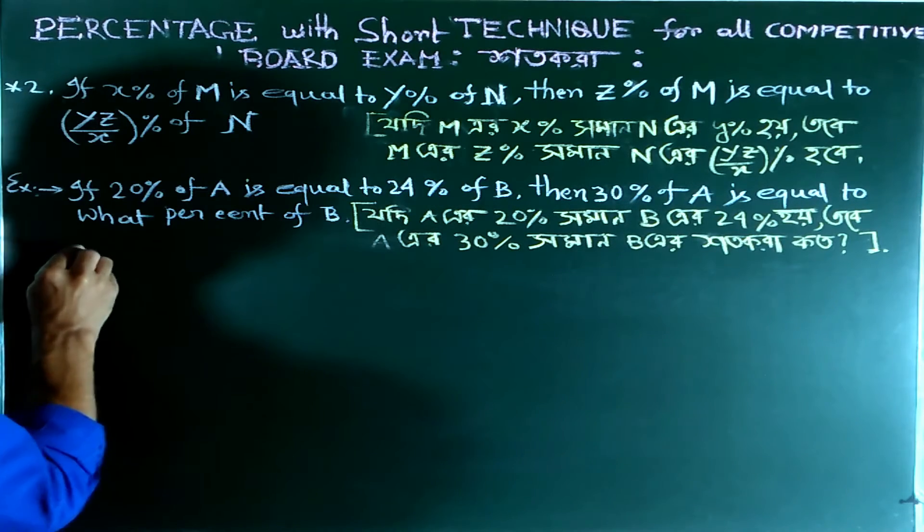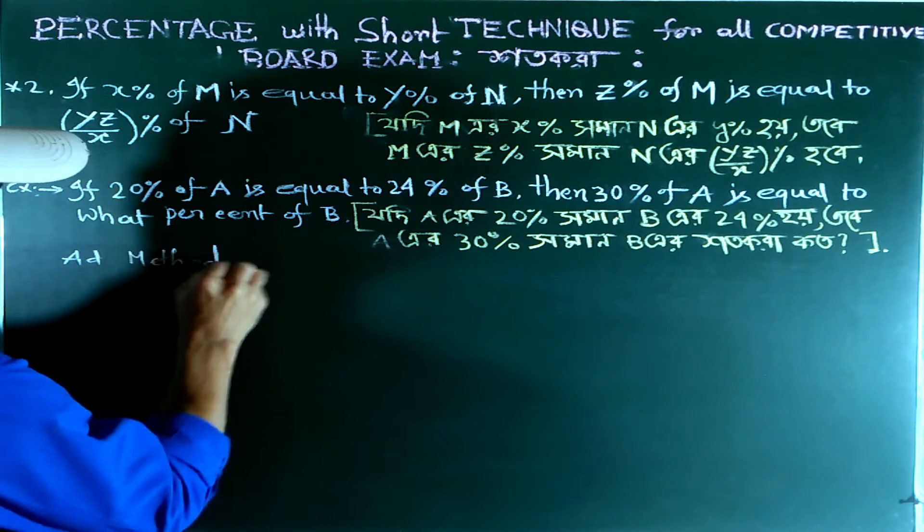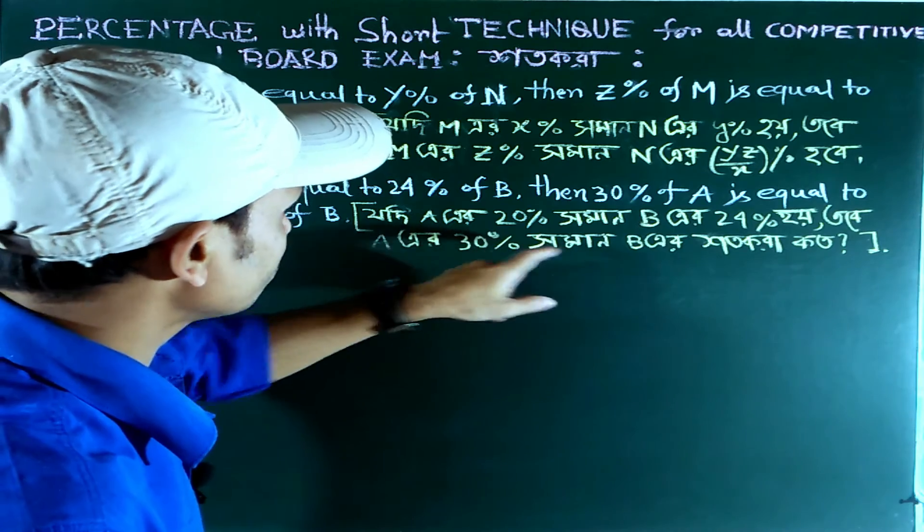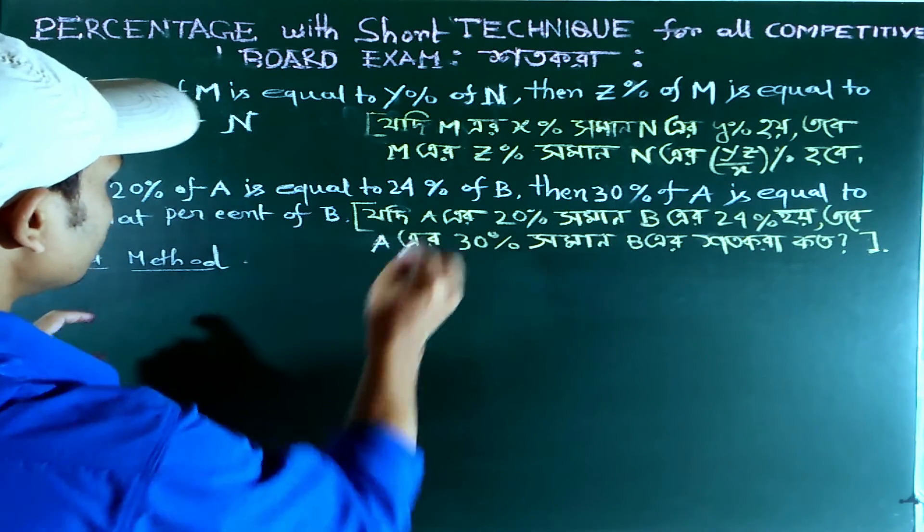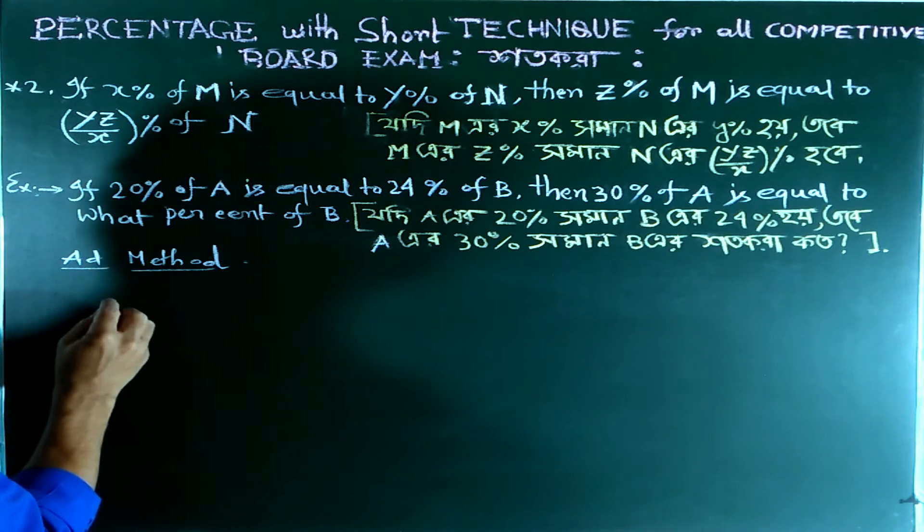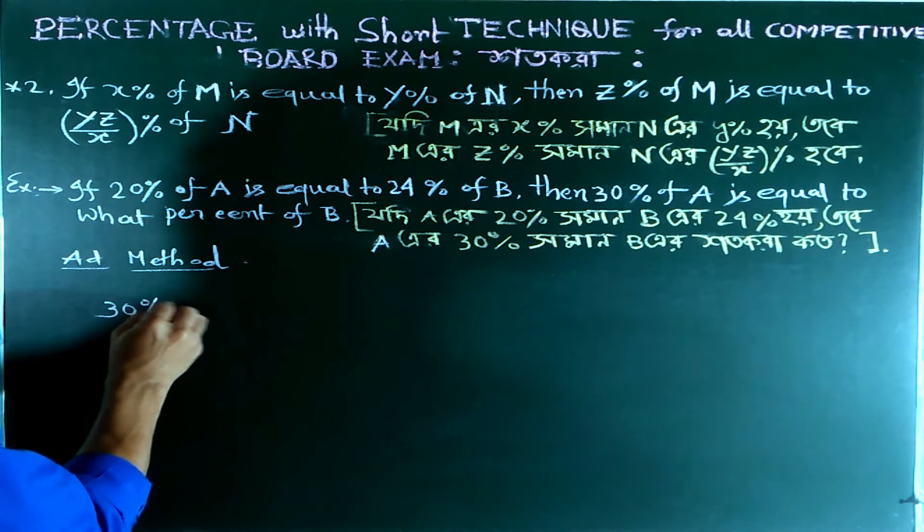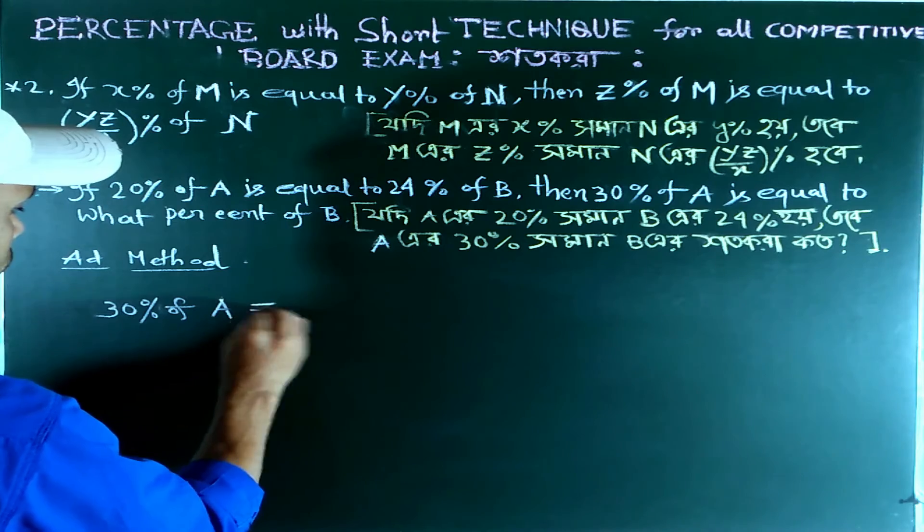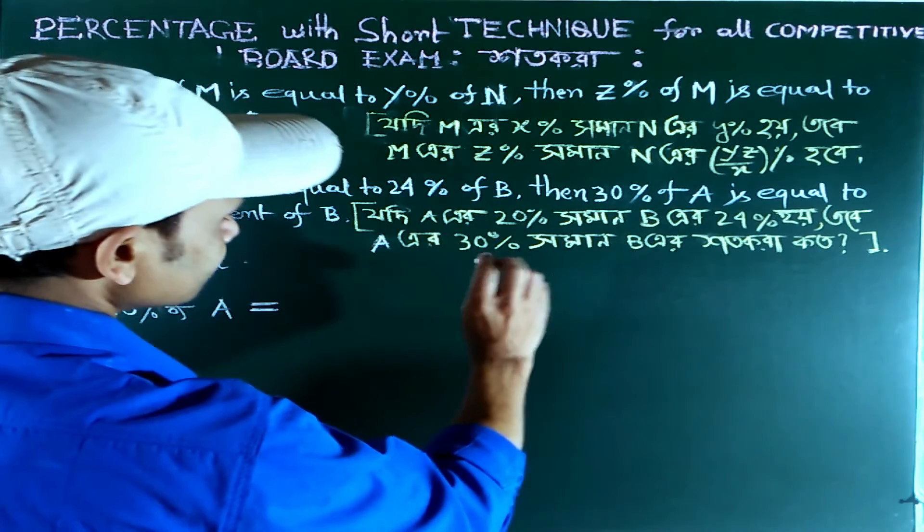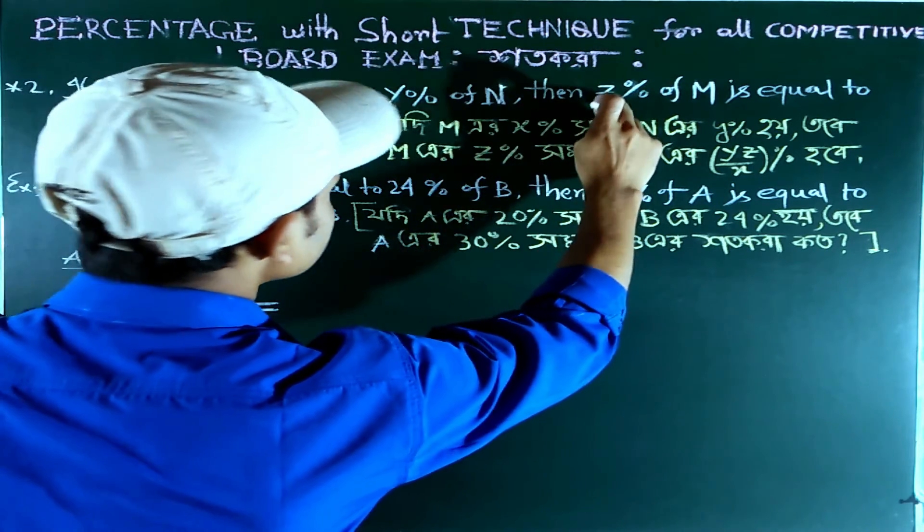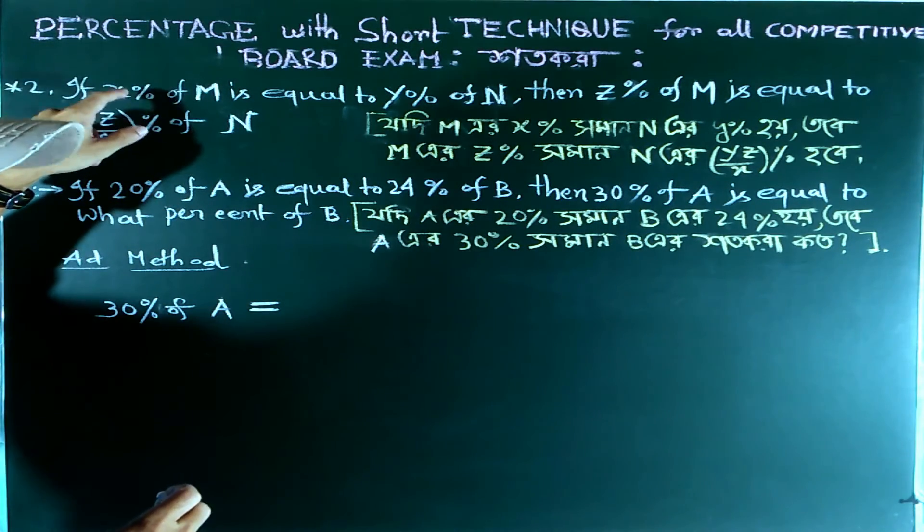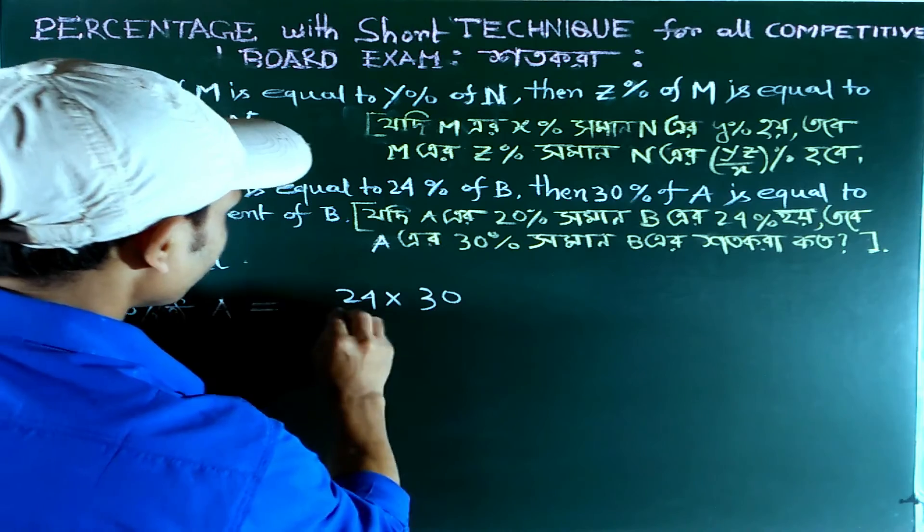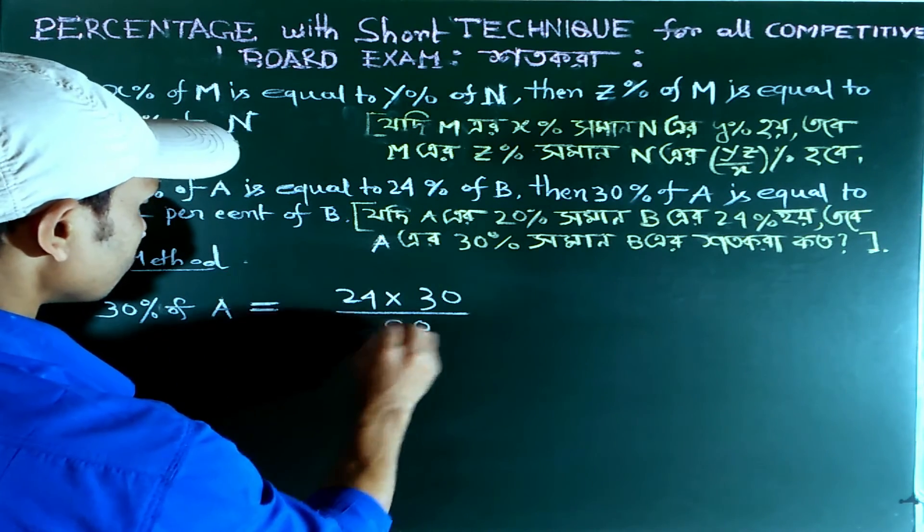Using the advance methodology, 30 percent of A equals - since 20 percent of A equals 24 percent of B, we apply the formula. Here Y is 24, Z is 30, and X is 20. So it's YZ upon X, which means 24 times 30 upon 20 percent.